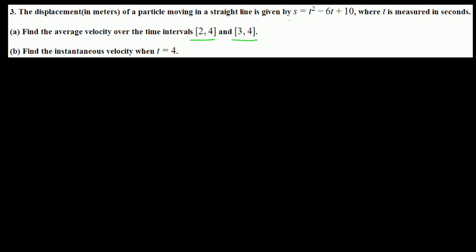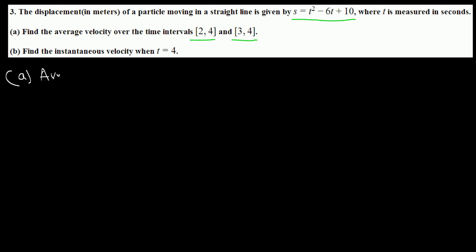In this question we want to find the average velocity over the time intervals [2,4] and [3,4]. Here's the displacement s as a function of t. We're going to find the average velocity for both of these time intervals.